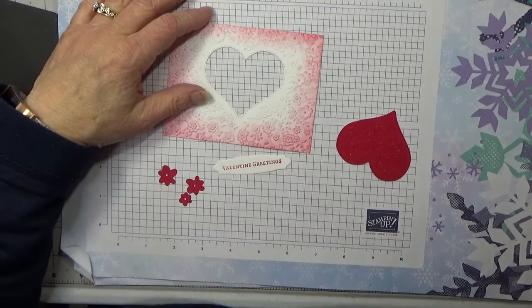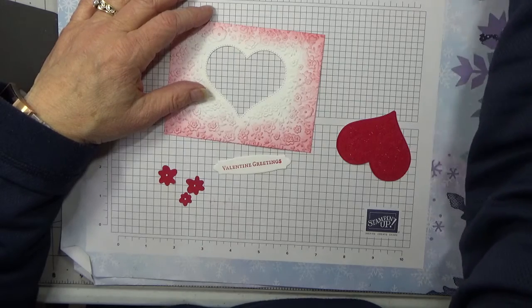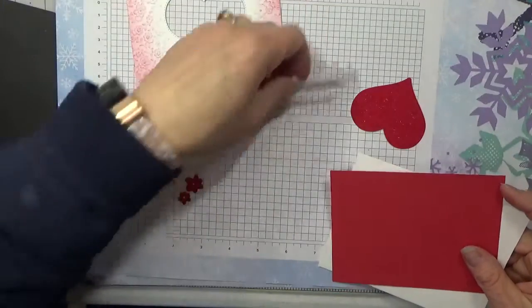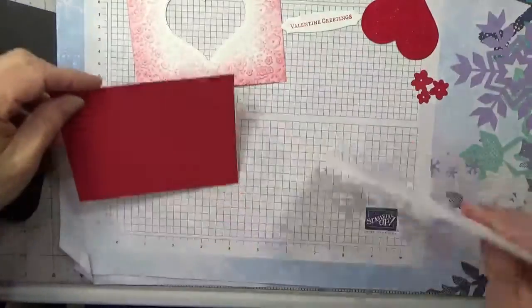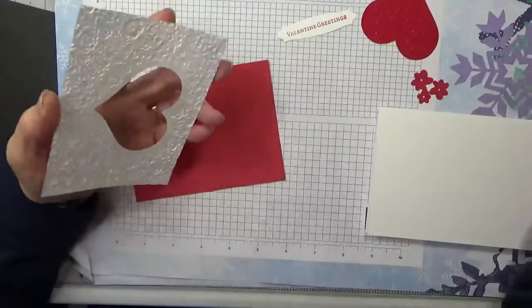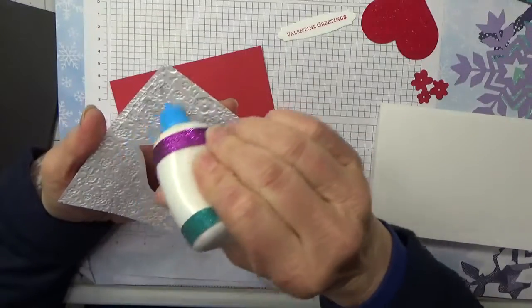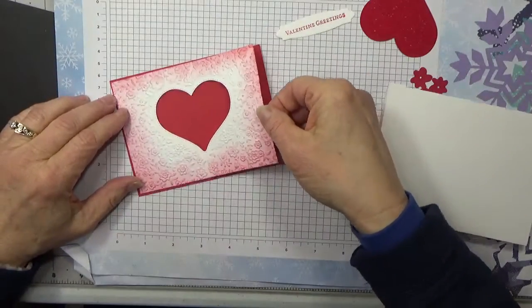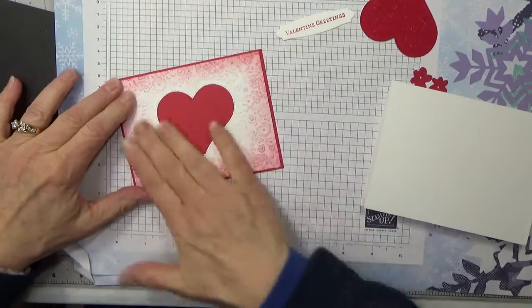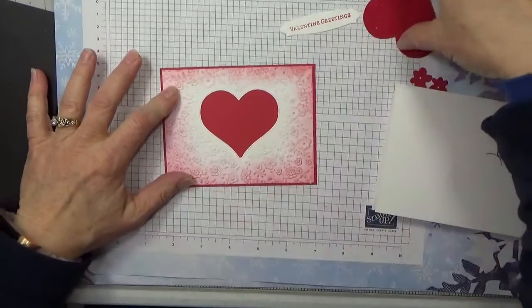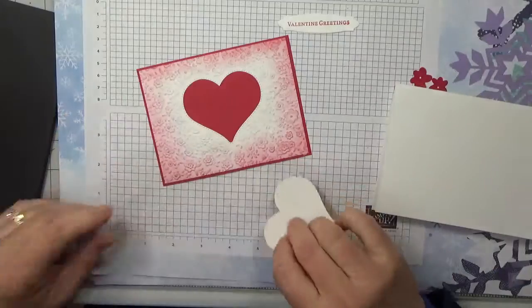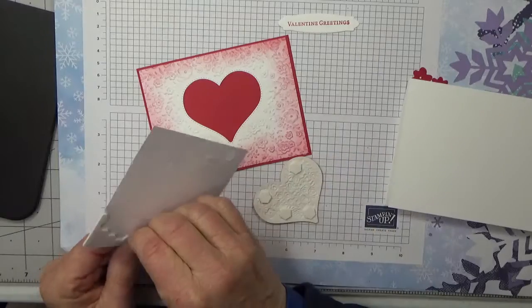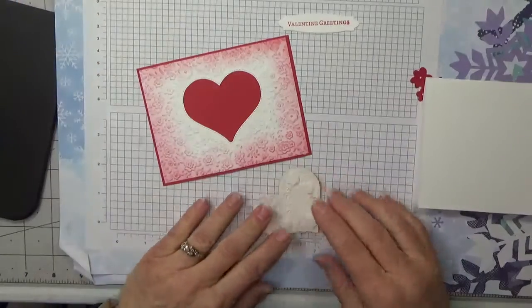I've made a bow right there, so let's bring our card base back in and we're going to just glue up our card front here and layer it on to a real red. There we go. Now this piece I'm going to pop, so I need some dimensionals. And I'm a fan of using quite a few dimensionals because I want them dimensional. I don't want them to flatten out.